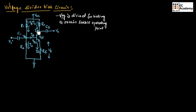Ic is the collector current or output current. Ie is the emitter current. Ib is the base current. I2 is the current flowing through resistor R2, and I1 is the current flowing through resistor R1. Here, I1 will be equal to Ib plus I2.